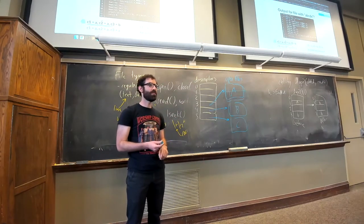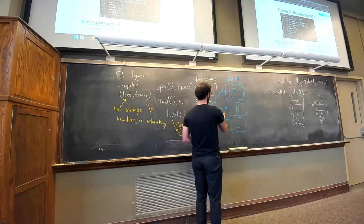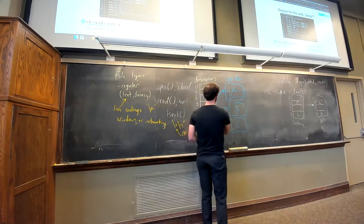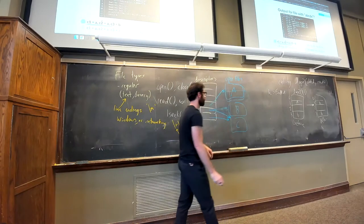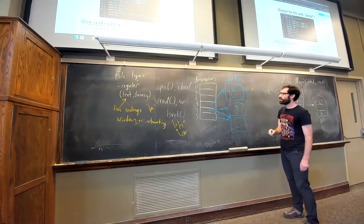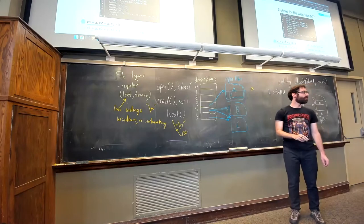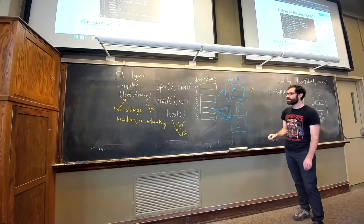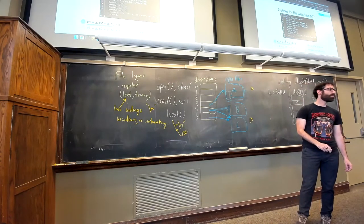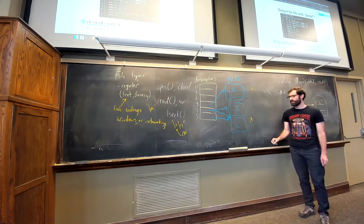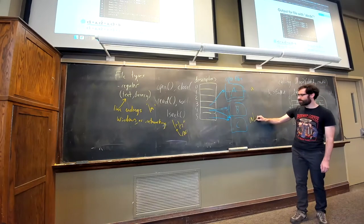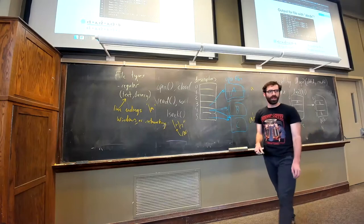When you read from f1, it points to A so you read the first character 'a' and the position advances to the second character. When you read from f2, that points to C so you read the first character of C which is 'a', and it increments the index. When you read from f3, f3 also points to C but C's position is now at the second character, so you get 'b'.